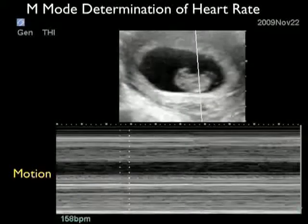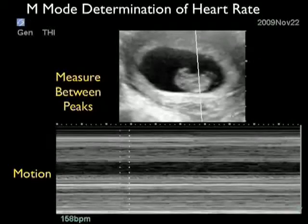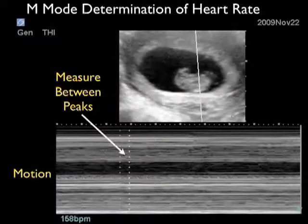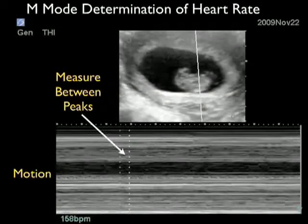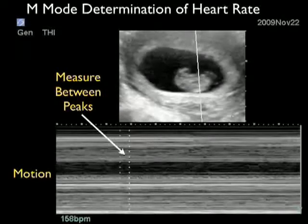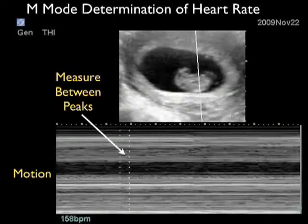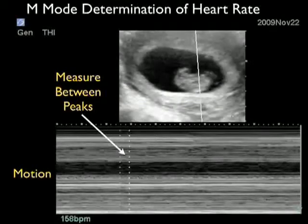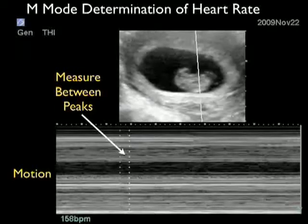Here we're going to use M-mode to determine the fetal heart rate. Notice we have the fetus zoomed up towards the top of the image, and we're placing the M-mode caliper directly over the fetal heart. Towards the bottom, we see the M-mode motion strip with little waves showing the motion of the fetal heart. In this particular ultrasound machine, we measure between each peak, and we can see a heart rate determination of 158 beats per minute. This is something we can print out and place on the chart to show that at the time we saw the baby, there was an actual heartbeat.